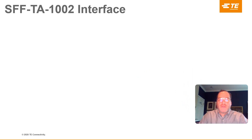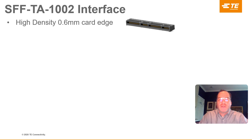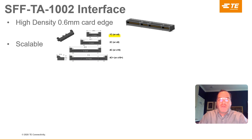TE's SFF TA-1002 connector is simple and elegant. The 0.6mm high density interface saves on PCB real estate and enables shorter board traces due to its compact size. It is scalable to support multiple signal counts. It handles x4, x8, x16 and more, all within a common interface, not to mention the capability to support asymmetry for supported protocols.